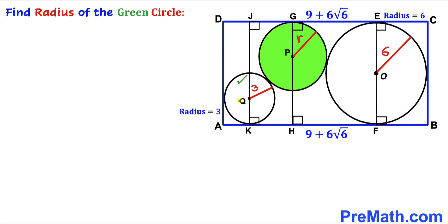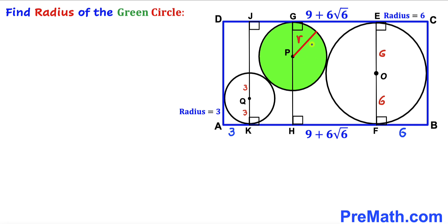Focusing on the small circle, its radius is 3 units. The radius of the largest circle is 6 units, so the FP length is 6 units as well. For the green shaded circle, its radius is labeled lowercase r, so both of its relevant radii are lowercase r.